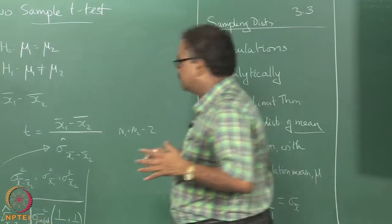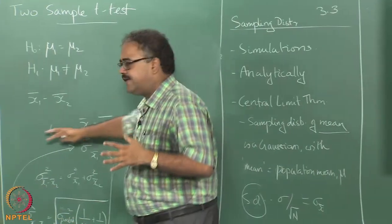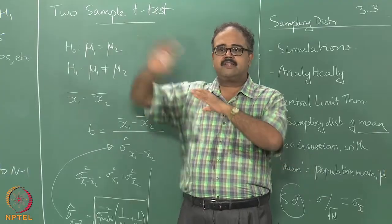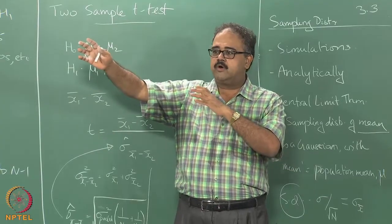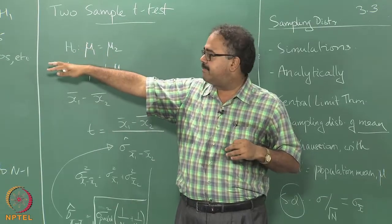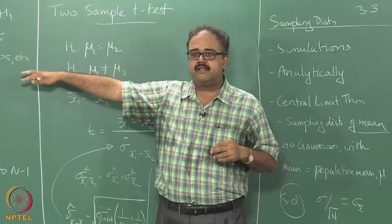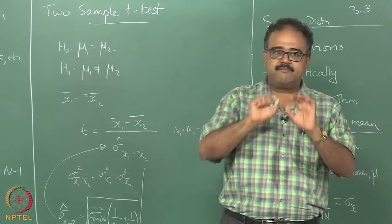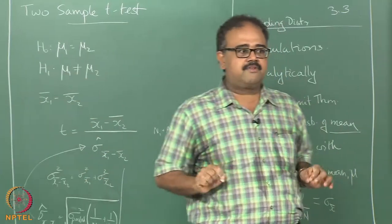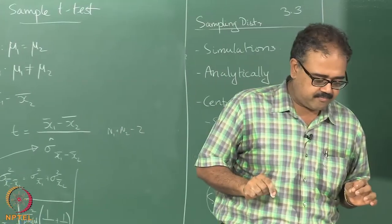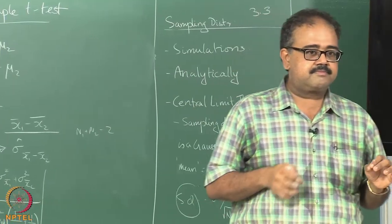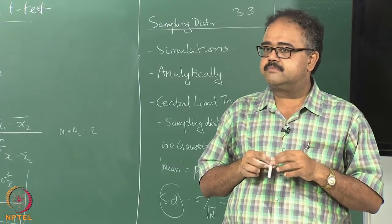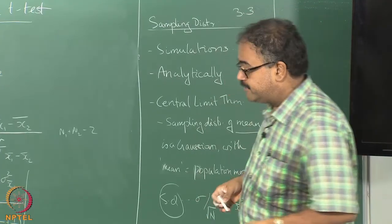Naturally, my t-statistic will become smaller if the variance is larger. The larger the t, the more significant my p-value can be. If the t-statistic becomes smaller because the variance is larger, I want some way to get rid of at least some of this variance.